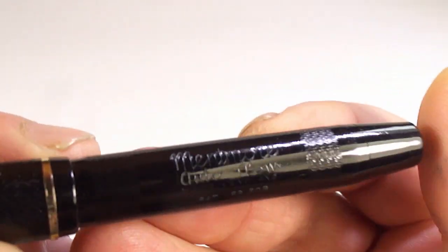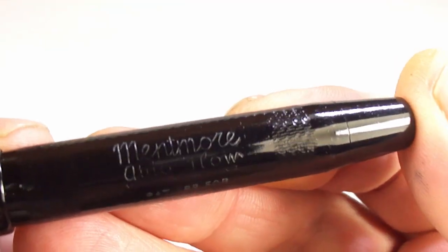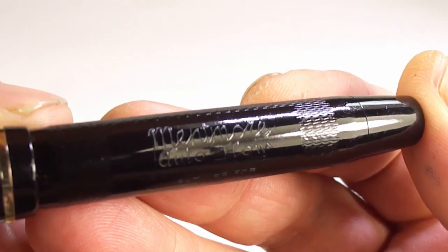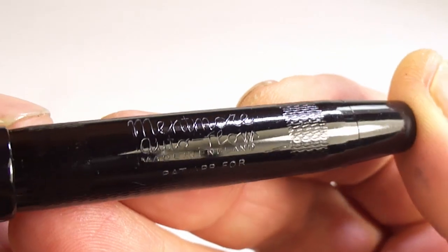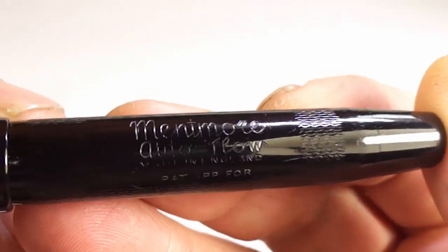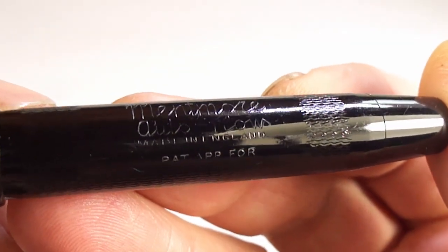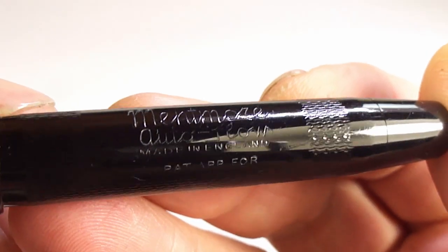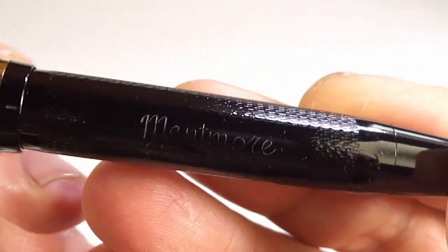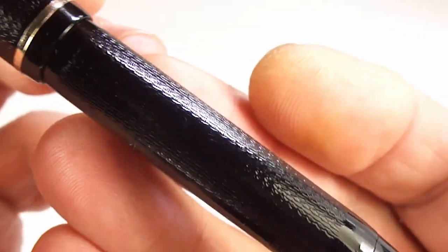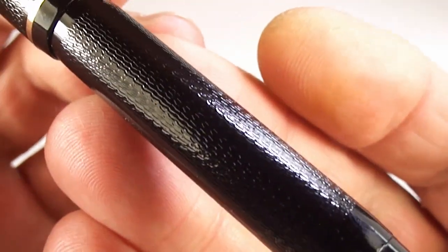Let's show you the barrel imprint there. You can see it says Mentmore Autoflow made in England. Made in England. And then just to the bottom there it's got, I think it says Pat Applied For. So we've got a lovely clear imprint while we're showing you the pen close up.